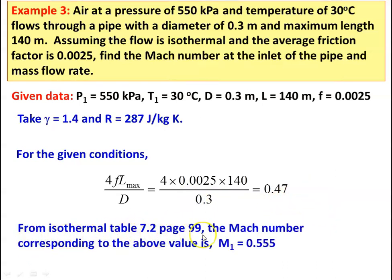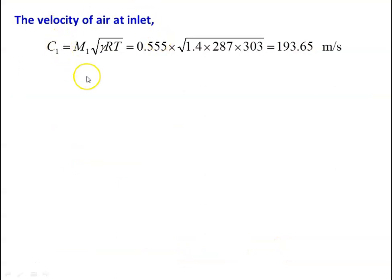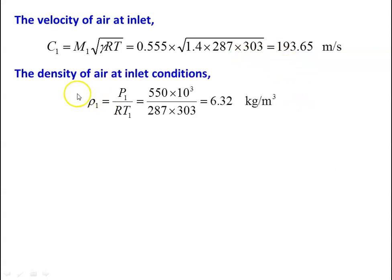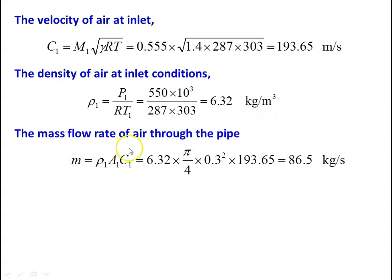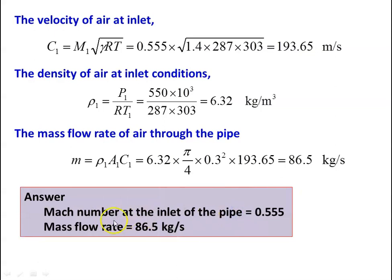From isothermal table 7.2, page 99, the Mach number corresponding to 4FL_max/D = 0.40 is M1 = 0.505. Air velocity at inlet: C1 = M1 × √(γRT1) = 0.505 × √(1.4 × 287 × 303) = 193.65 m/s. Density at inlet: ρ1 = P1/(RT1) = 550×10³ / (287 × 303) = 6.32 kg/m³. Mass flow rate: ṁ = ρ1 A1 C1 = 6.32 × (π/4 × 0.3²) × 193.65 = 86.5 kg/s. Answer: M1 = 0.505, mass flow rate = 86.5 kg/s.